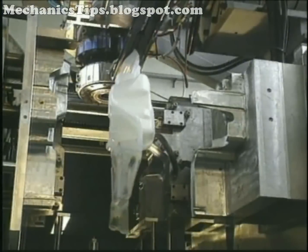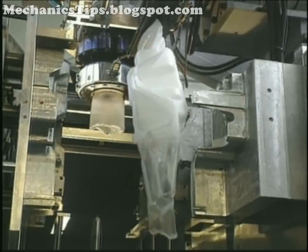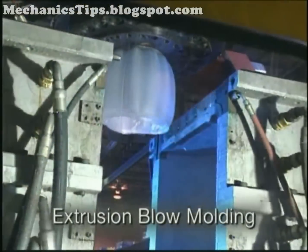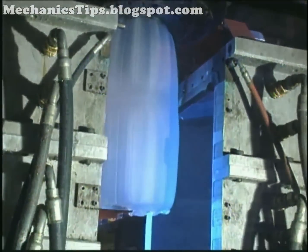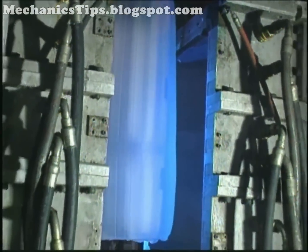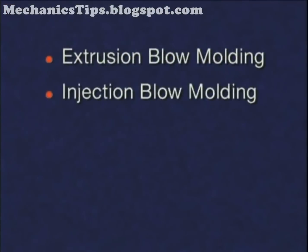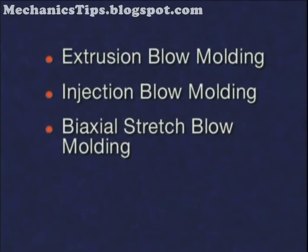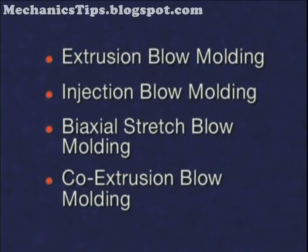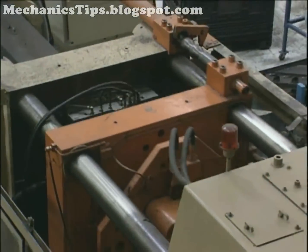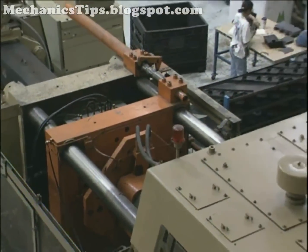Most thermoplastic blow molded products are produced via extrusion blow molding using high-density polyethylene, or HDPE, but there are many additional blow molding processes which include injection blow molding, biaxial stretch blow molding, and coextrusion blow molding. These blow molding processes all use elements of either extrusion or injection molding, or a combination of the two.